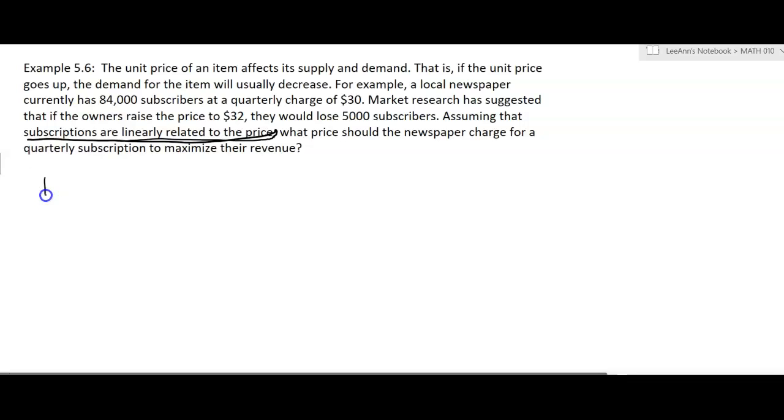Okay, so revenue, how do you figure out how much money you're making if you're the newspaper company? You take the price that you're charging times the number of subscribers. So we'll go ahead and use P for price, and the book uses Q for subscribers. We'll use that. So we're going to say that's how you find revenue. You take the price times the subscribers. Price is going to be P.